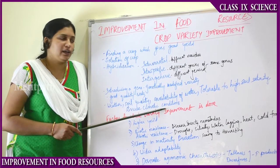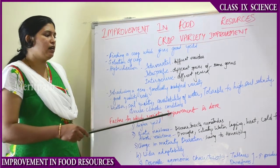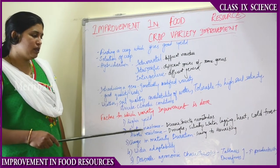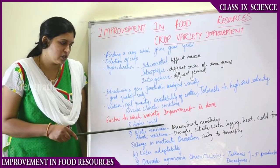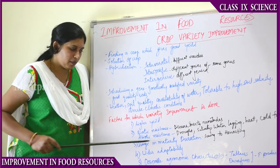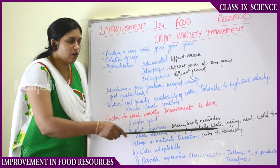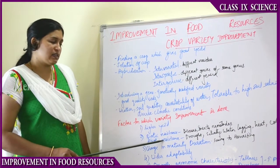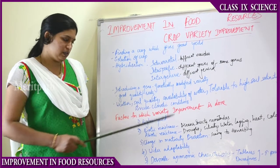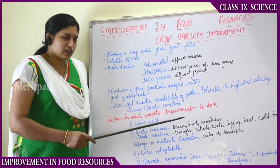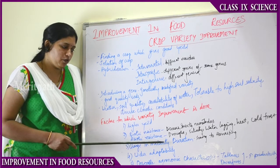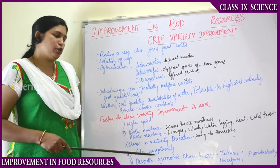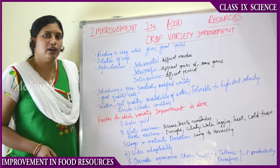Those crops should be tolerant to diverse climatic conditions. Variety improvement is done for higher yield, and involves biotic resistance and abiotic resistance. Biotic resistance is resistance towards diseases, insects, and nematodes. Abiotic resistance means resistance to drought, salinity, waterlogging, heat, cold, and frost. Change in maturity duration is also important - crops that go from sowing to harvesting in only four months give good yield and increase farmer income. Wider adaptability means plants can grow in any diverse climatic conditions.